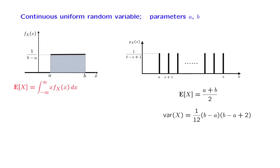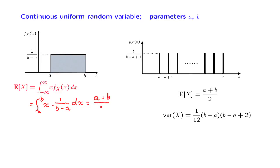Let us now calculate the mean or expected value for the continuous case. The mean is defined as an integral that ranges over the entire real line. However, the density is equal to 0 outside the interval from a to b, so there is no contribution to the integral from those x's outside that interval. This means we can integrate just over the interval from a to b, where the density equals 1 over b minus a. Carrying out this integration, we find an answer equal to a plus b over 2, which is the same as in the discrete case.